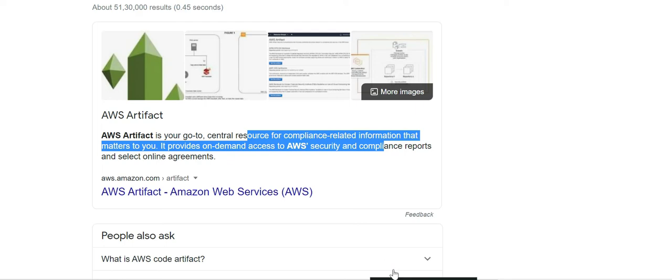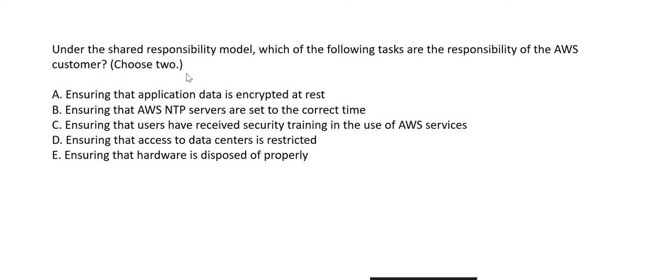Sixth question: under the shared responsibility model, which tasks are the responsibility of AWS customers — choose two. Option A: ensuring application data is encrypted at rest — yes, AWS does not enable encryption at rest by default; the customer must enable it. Option B: ensuring NTP servers are set to the correct time — this is purely AWS's responsibility.